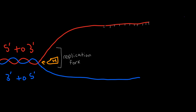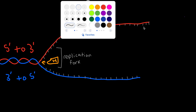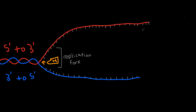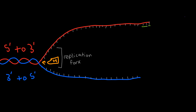When the replication fork is created, our nitrogenous bases are exposed. We have our four nitrogenous bases: adenine, cytosine, guanine, and thymine. After helicase has exposed all of the nitrogenous bases, the enzyme primase comes in. Primase releases an RNA segment known as the primer, which is basically the start line in this whole DNA replication race. You can think of the primer as a helicopter launch pad, telling the helicopter where to start and where to land.